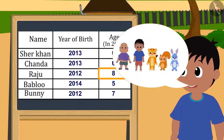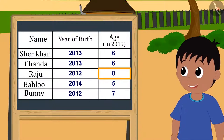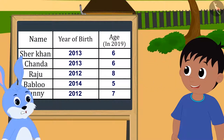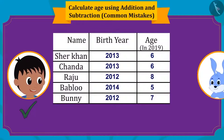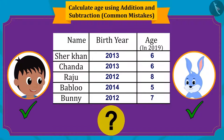Now Raju is saying that he is elder than all of them, so he will decide which game to play. While Bunny is saying that his and Raju's age should be equal, as they both have the same year of birth. What do you think, children — who is right? Raju or Bunny?